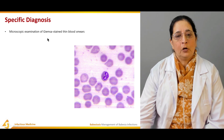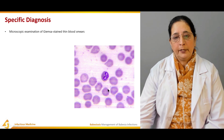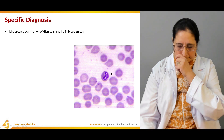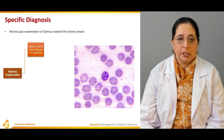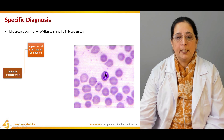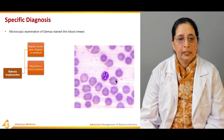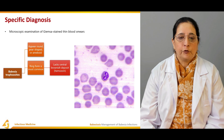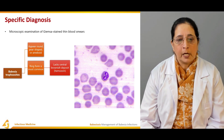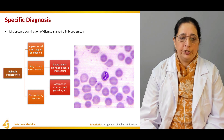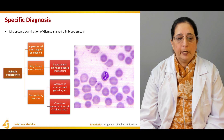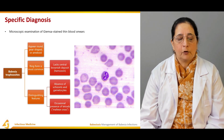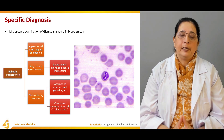For specific diagnosis, microscopic examination of a Giemsa-stained thin blood smear is performed. Babesia trophozoites appear round, pear-shaped, or amoeboid within red blood cells. The ring form is most common and lacks a central brownish deposit. Distinguishing features include the absence of schizonts and gametocytes, and the presence of the Maltese cross (tetrad form).